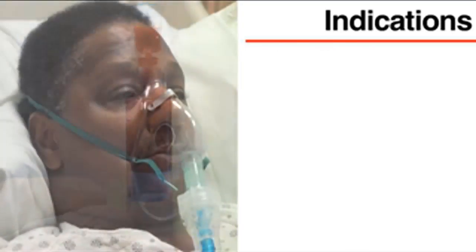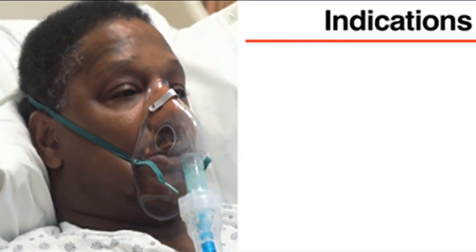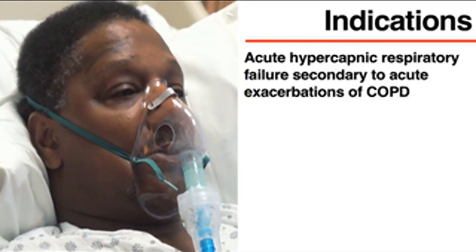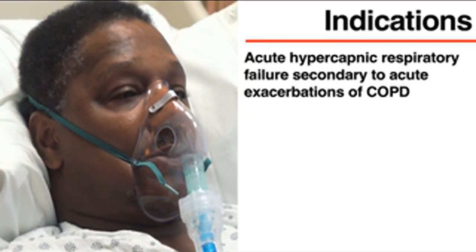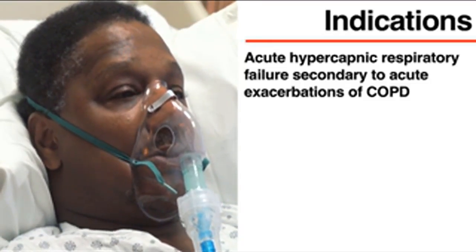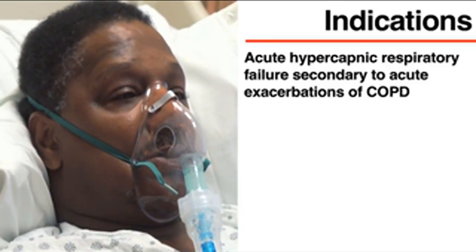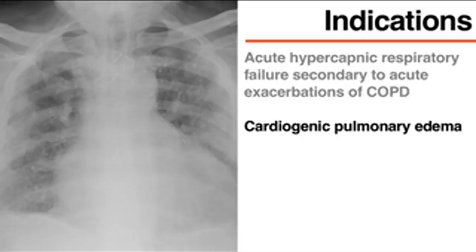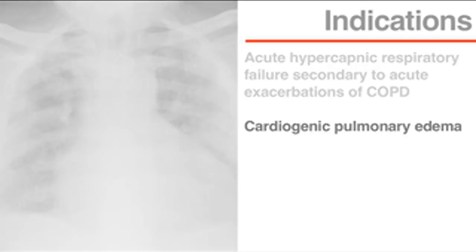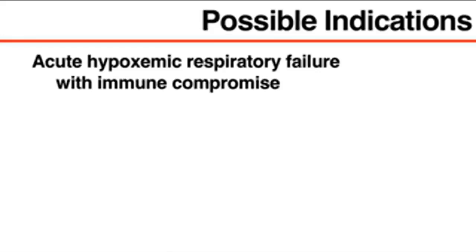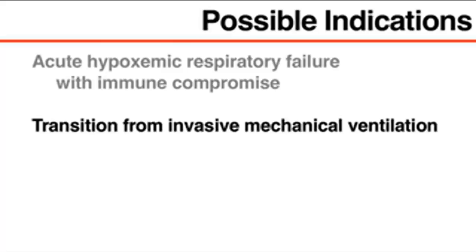There is strong evidence that BPAP improves outcomes in hypercapnic respiratory failure secondary to acute exacerbations of chronic obstructive pulmonary disease, or COPD, and that both BPAP and CPAP improve outcomes in cardiogenic pulmonary edema in the absence of shock or ischemia. There is some evidence that BPAP may be used to treat acute hypoxemic respiratory failure in patients with immune compromise and to help patients with COPD make the transition from invasive mechanical ventilation to spontaneous breathing.